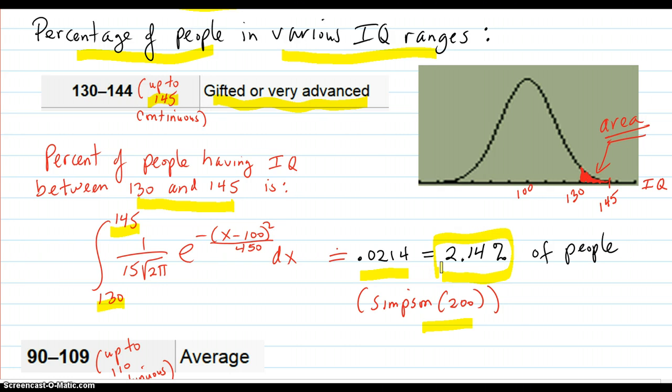So that's pretty hard to be up there with that IQ range because there's only about 2% of people that are up there. And here is the area right here. This area right there is what represents the percentage of people that have an IQ in that range.